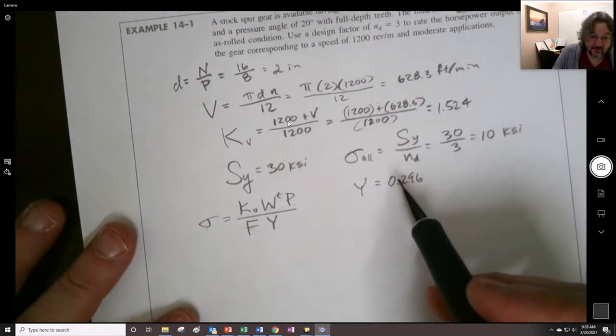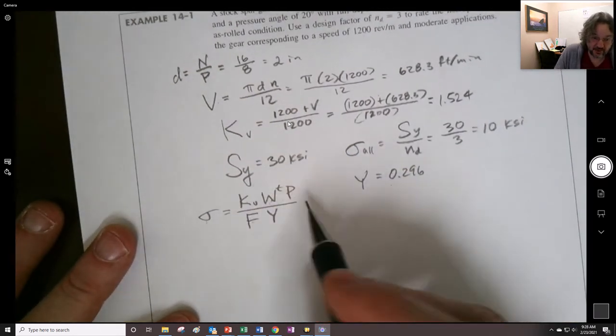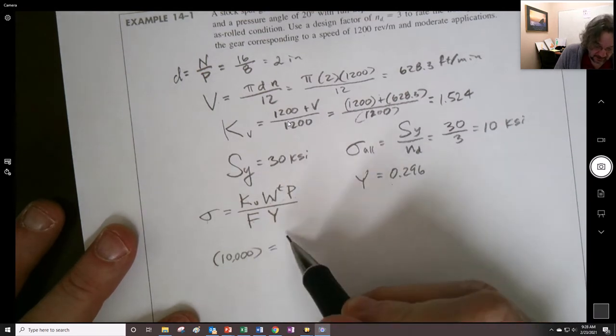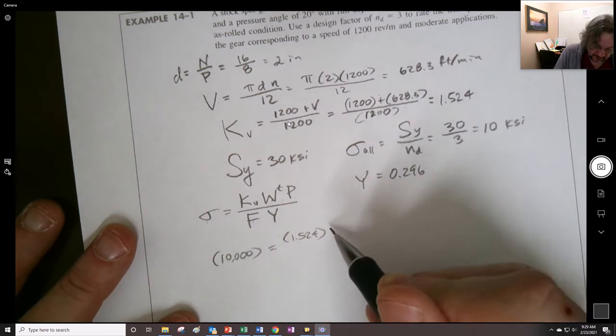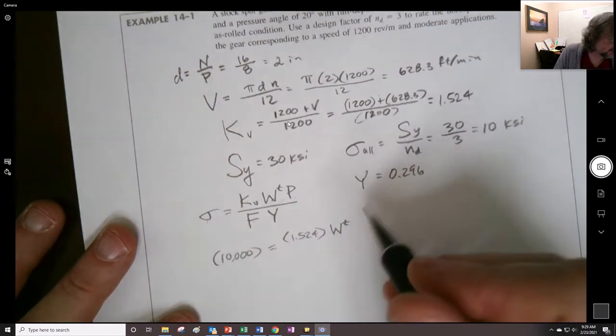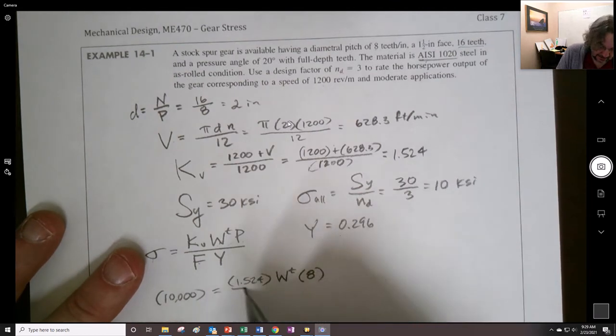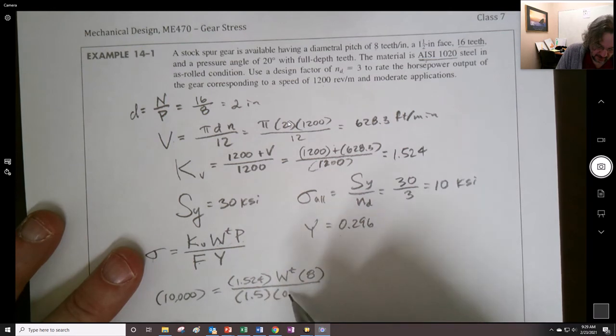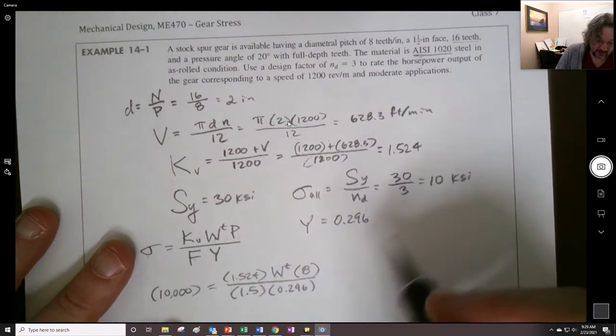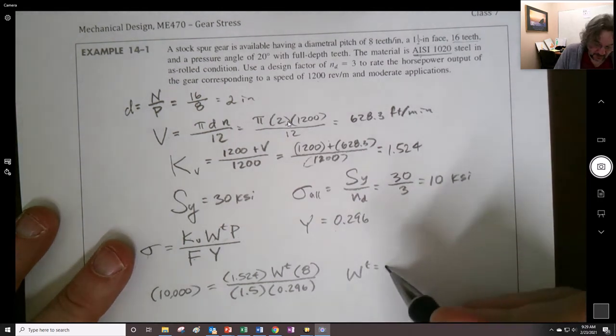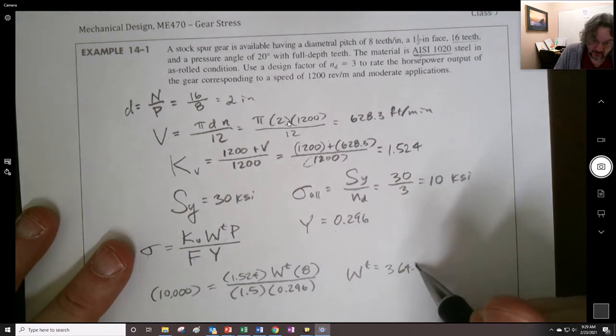All right. So I think we have everything we need. So I'll write it out this way. Right in here. And I'll say that we have 10,000. Remember, these are KSI. Is equal to KV of 1.524. WT is what we want to get. The diametral pitch, as we were told, was 8 divided by the face width of 1.5 and with a Lewis form factor of 0.296. You do all this and we end up with 364.3 pounds.